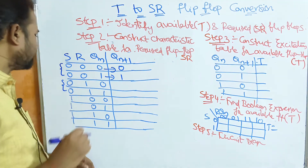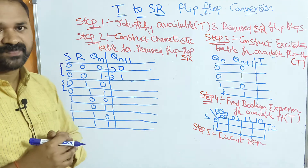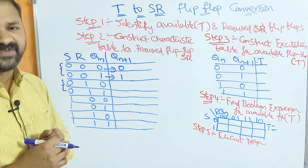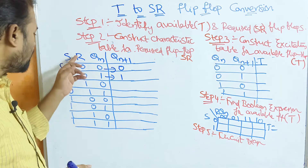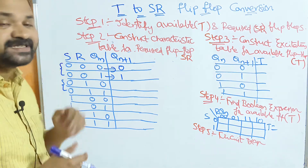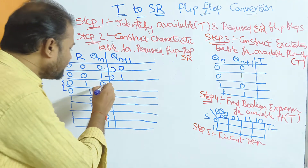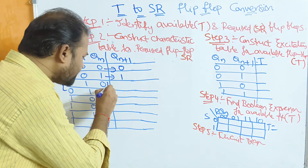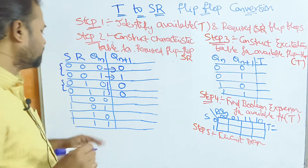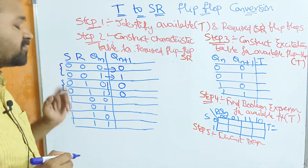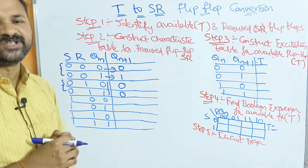In the next 2 cases, SR values are 0 1. Here R=1, which means reset. Reset means the output is 0. So now, irrespective of the current state output, the next state output is always 0 — because R=1 means reset, and reset means output is 0.